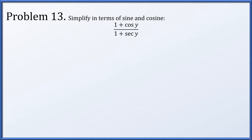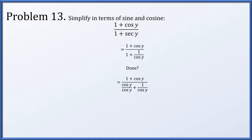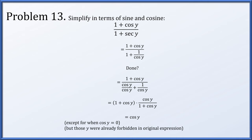In problem 13, we will simplify the expression in terms of sine and cosine. We begin with (1 + cos(y)) all divided by (1 + sec(y)). We replace sec(y) with 1/cos(y). Looking at that denominator 1 + 1/cos(y), we give them a common denominator of cos(y). The numerator (1 + cos(y)) I bring out; the denominator becomes (cos(y) + 1)/cos(y), but it's the denominator of a fraction, so I bring it up top by reciprocating. I can now cancel out (1 + cos(y))/(1 + cos(y)), leaving behind just cos(y). This isn't valid if the cosine of y is 0 — but in the original expression that was already forbidden because we have a secant. We also can't have cos(y) equal to −1, since that makes secant −1 and the original denominator would be 0 anyway.